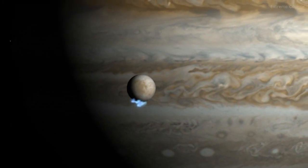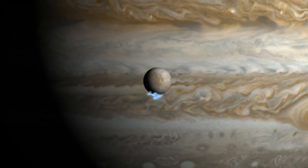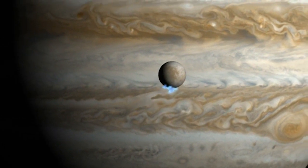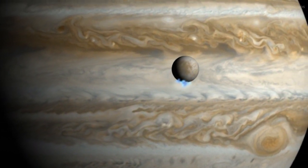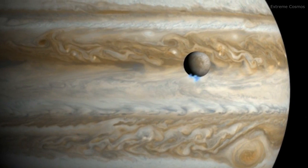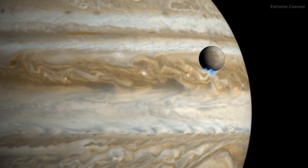In 2013, Hubble provided the first observational evidence of water vapor erupting from the frigid surface of Jupiter's moon Europa, near its south pole.